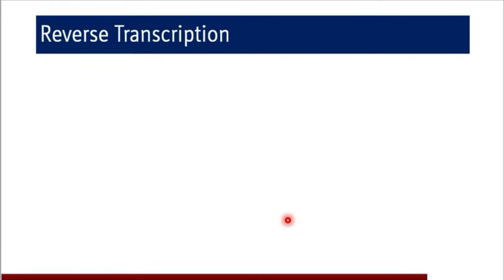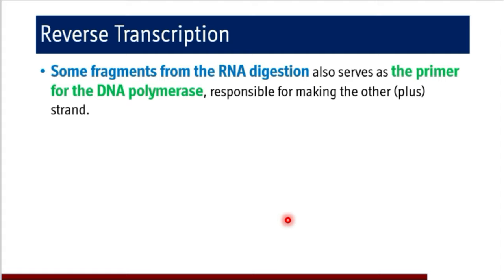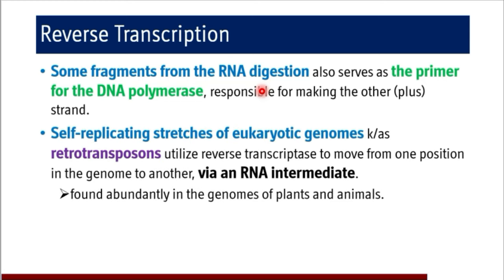A few more facts regarding the reverse transcription process: RNA fragments from the RNA digestion by RNase H activity can also serve as primers for DNA polymerase, meaning hairpin loop formation at the 3' end of the complementary DNA may not always be necessary. Retrotransposons — self-replicating stretches of eukaryotic genome — utilize reverse transcriptase to move from one position in the genome to another via an RNA intermediate, and they are mostly found in genomes of plants and animals.